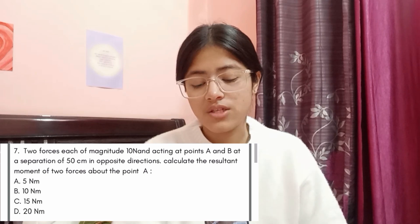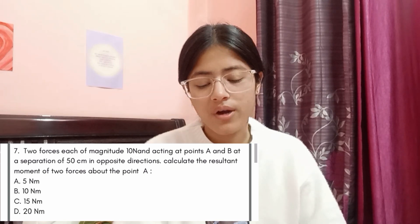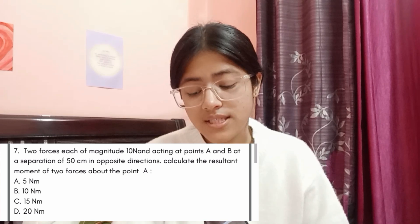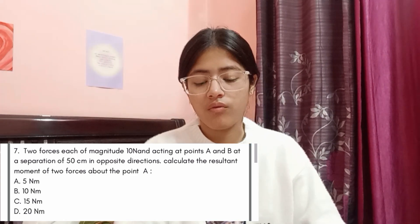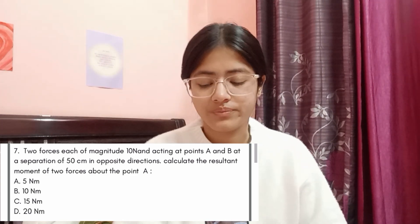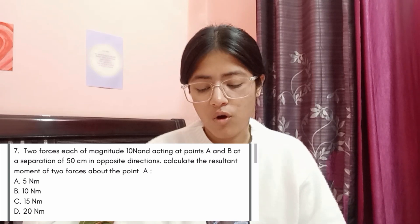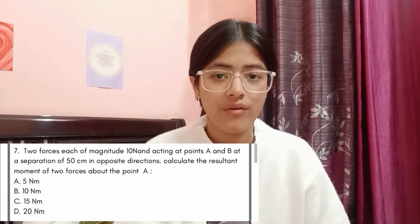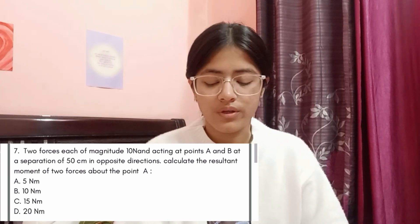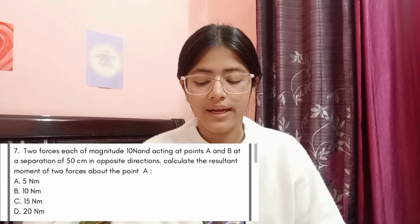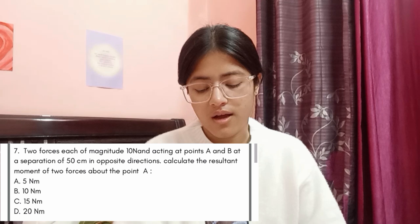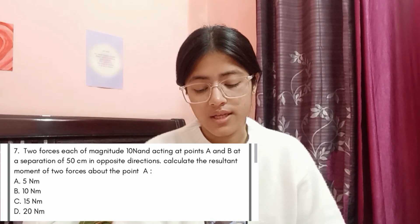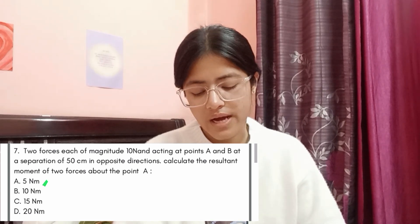Question 7: two forces each of magnitude 10 N acting at points A and B at a separation of 50 centimeters in opposite directions. Calculate the resultant moment of the two forces about point A. Options: A: 5 N·m, B: 10 N·m, C: 15 N·m, D: 20 N·m. The answer is Option A, 5 Newton meters.